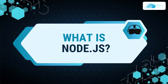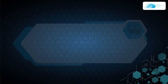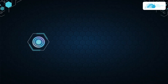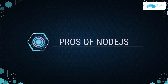Moving on, let's talk about what exactly is Node.js. Node.js is primarily a runtime environment based on Chrome's V8 JavaScript engine. Given that JavaScript is one of the most widely used languages today, Node.js has benefited from this popularity by rising to become one of the most often used backend frameworks. Node.js offers a variety of significant features that draw developers.